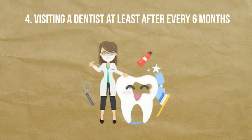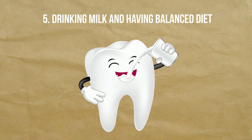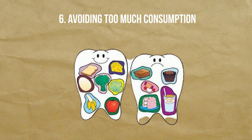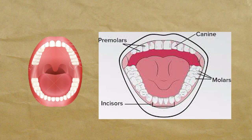Visit a dentist at least every six months for regular dental checkups. Drink milk and have a balanced diet for strengthening the teeth. Avoid too much consumption of all kinds of sweet food and drinks, as they are harmful not only for teeth but for overall health too.